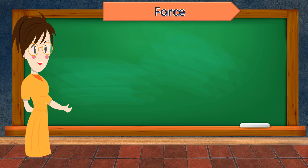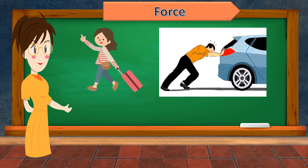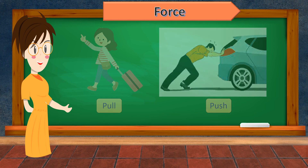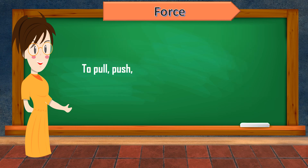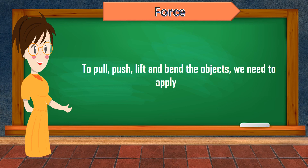I have some pictures to show you. Can you identify the appropriate actions in the following pictures? In the first picture, we can see that the girl is pulling her trolley bag. In the second picture, we can see that the man is trying to push his car. In the third picture, we can see that the man is trying to bend the pipe. In the fourth picture, we can see that the man has lifted the load on his back. Here we see that to pull, push, lift, and bend objects, we need to apply force.